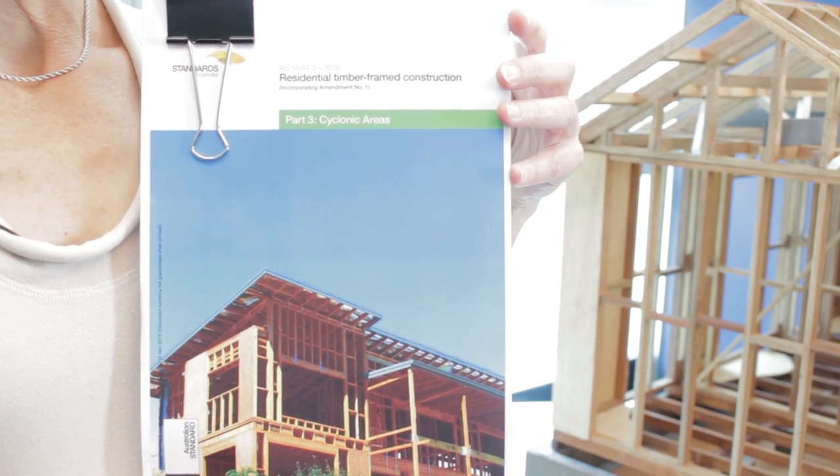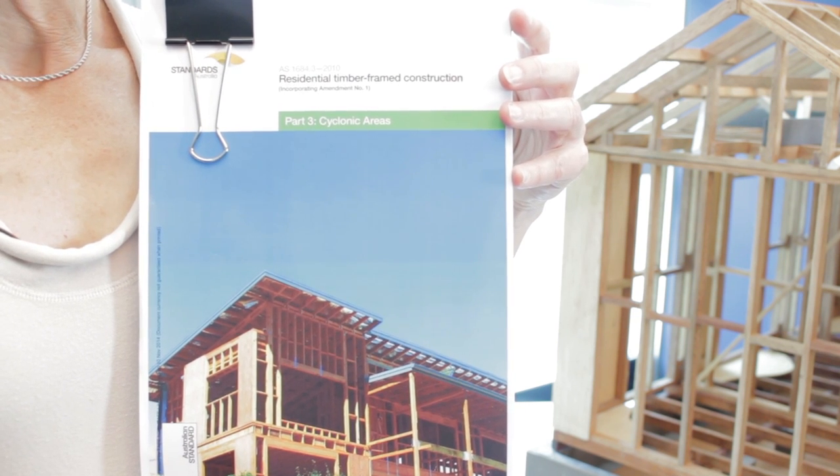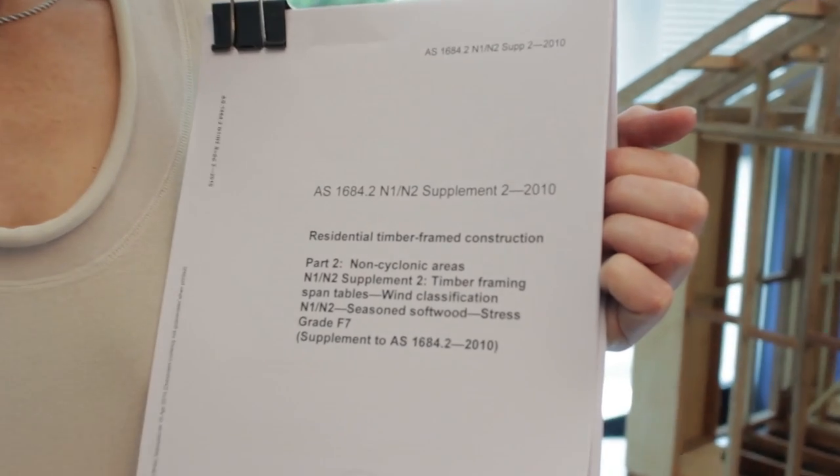Generally speaking, AS 1684 deals with class 1 and class 10 buildings as defined in the Building Code of Australia — that is, houses and other residential buildings which may be brick veneer, timber framed weatherboard clad, or fibro clad buildings, or non-habitable structures such as sheds and carports. AS 1684 has different tables for different wind classifications, also for different stress grades for seasoned versus unseasoned timber, and each set of tables includes a span table for every timber member that you might need to design in a timber framed house.